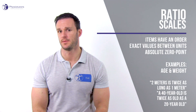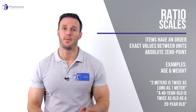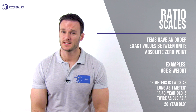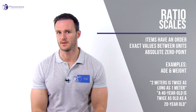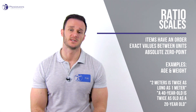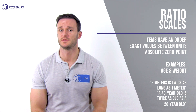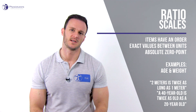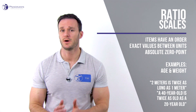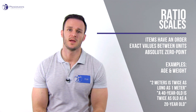Ratios have all of the above — they tell us about the order, about the exact values between units, and they do have an absolute zero point. Typical examples are age and weight, which both have a true zero point. We can then also say that 2 meters is twice as long as 1 meter, or that a 40 year old is twice as old as a 20 year old.